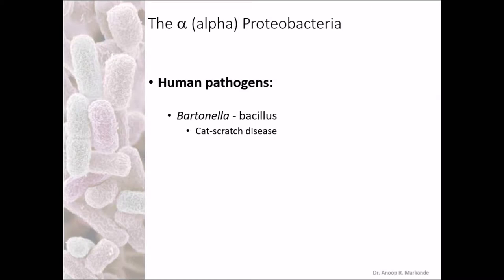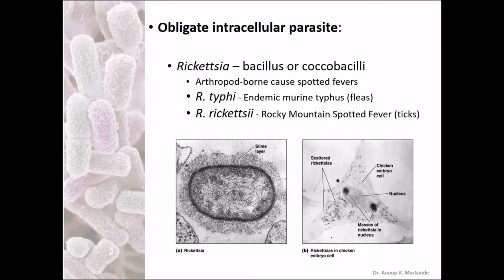Among Alpha Proteobacteria, there are human pathogens like Bartonella, which is a bacillus — a rod-shaped bacterium — that causes cat scratch disease. The obligate intracellular parasite Rickettsia is a bacillus or coccobacillus in nature. It is arthropod-borne and causes spotted fever. Rickettsia typhi and Rickettsia rickettsii are well-known organisms among these. We will discuss about Rickettsia in the later chapters.